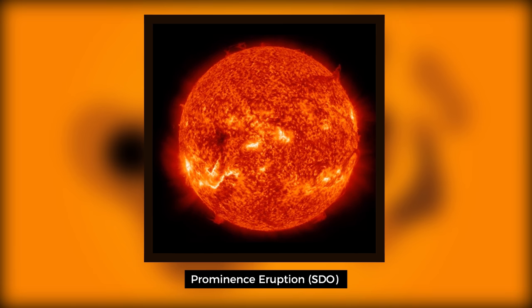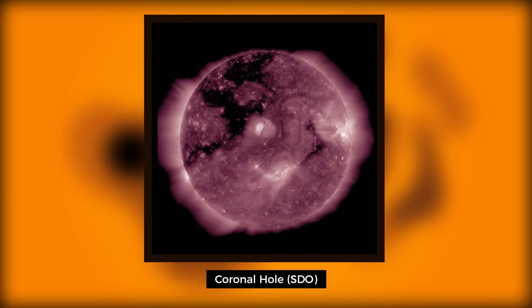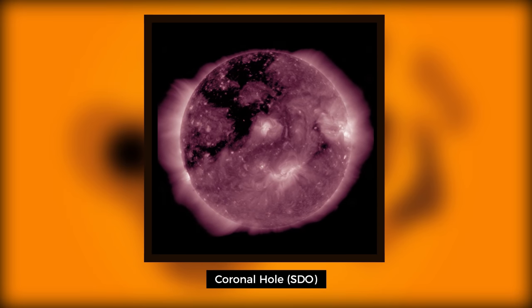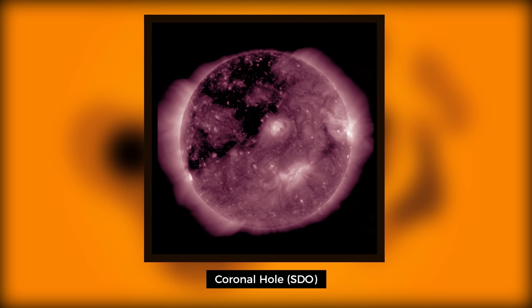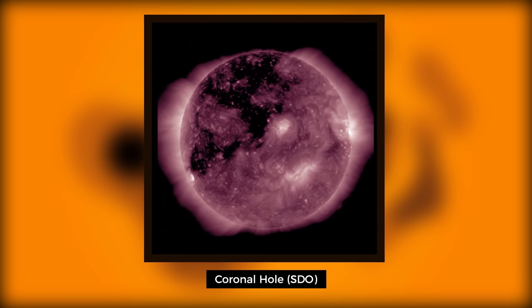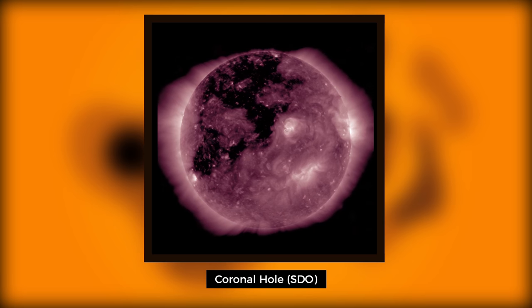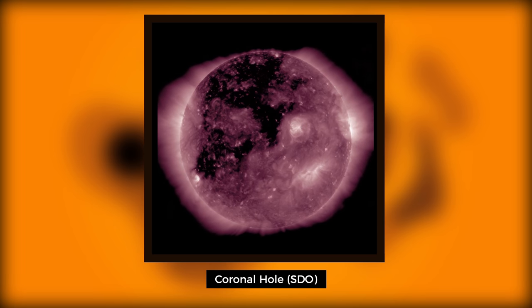Not all auroras are caused by CMEs, however. Coronal holes allow the corona of the sun to open up, allowing plasma to flow freely at high speeds for long periods. On satellite imagery, they appear as dark black patches.